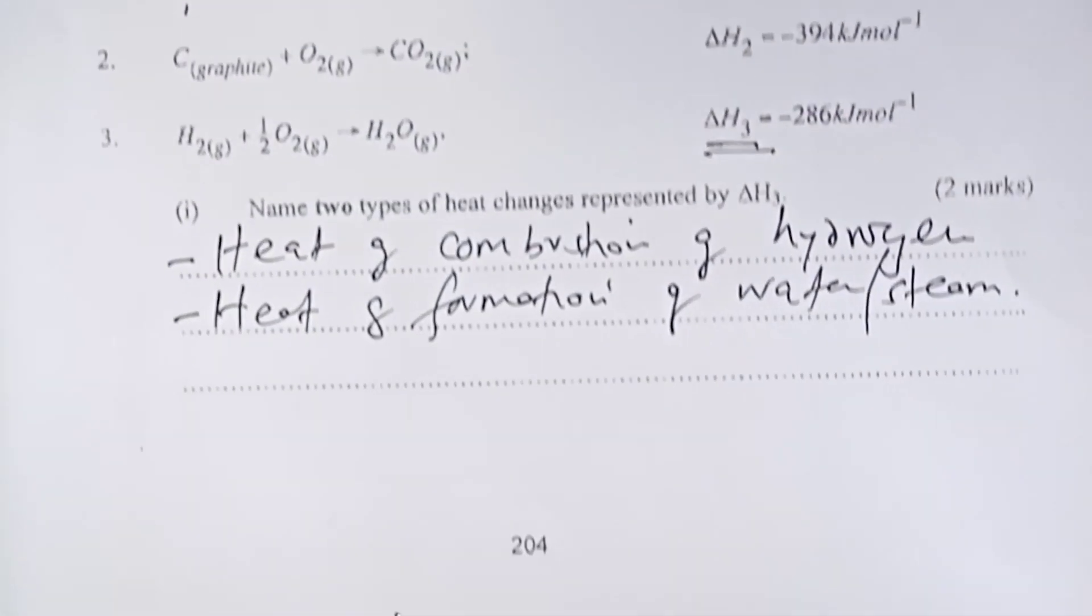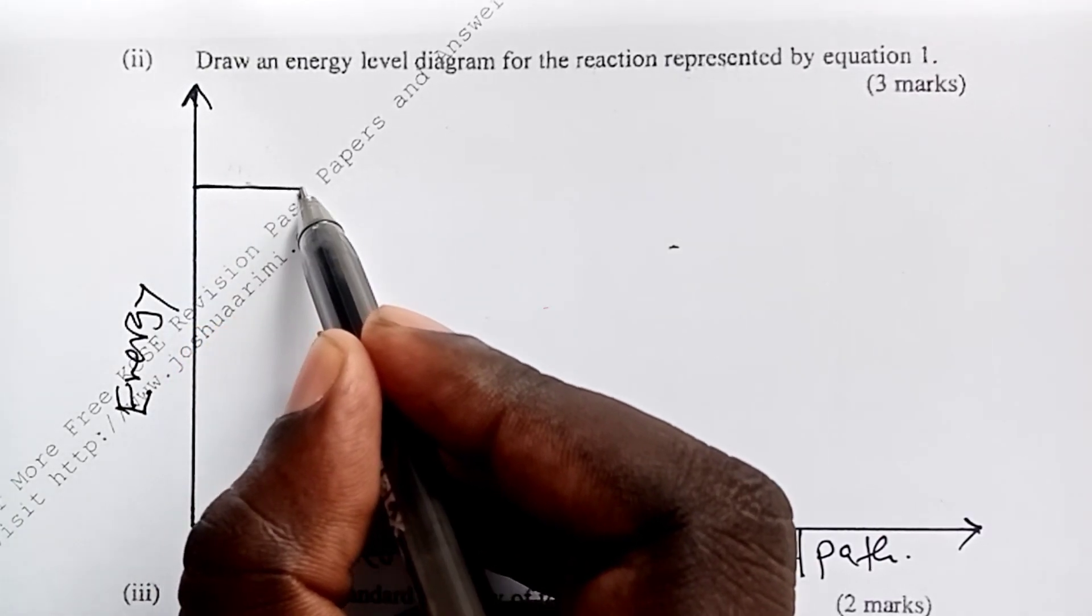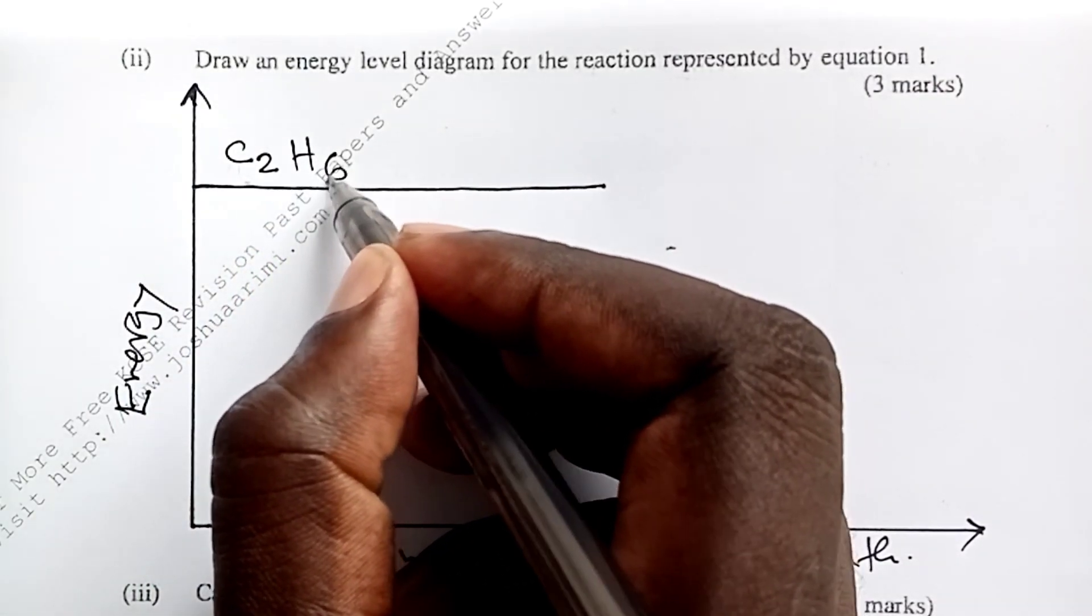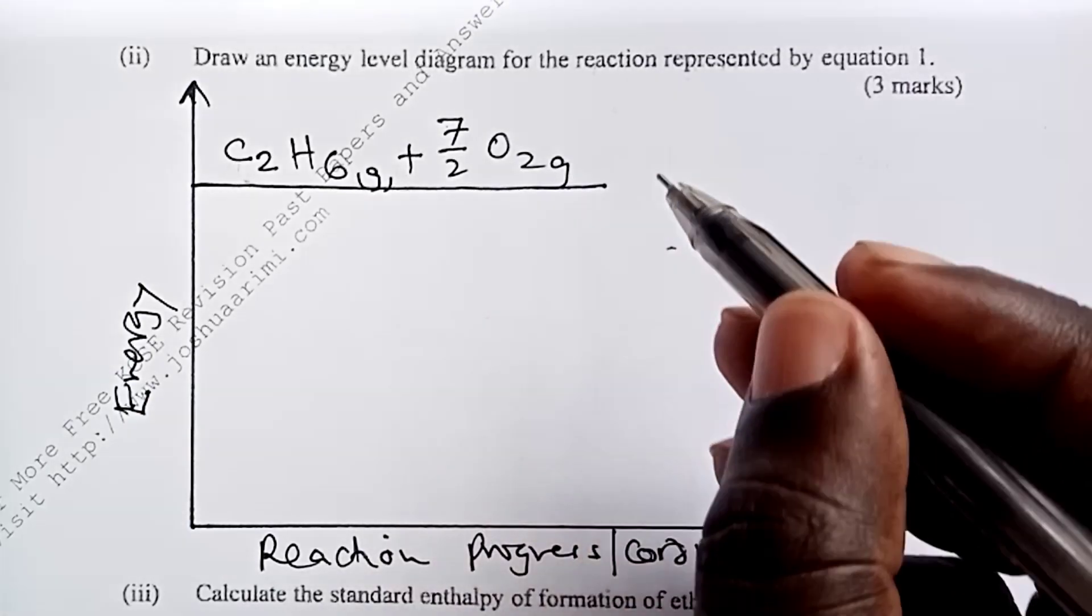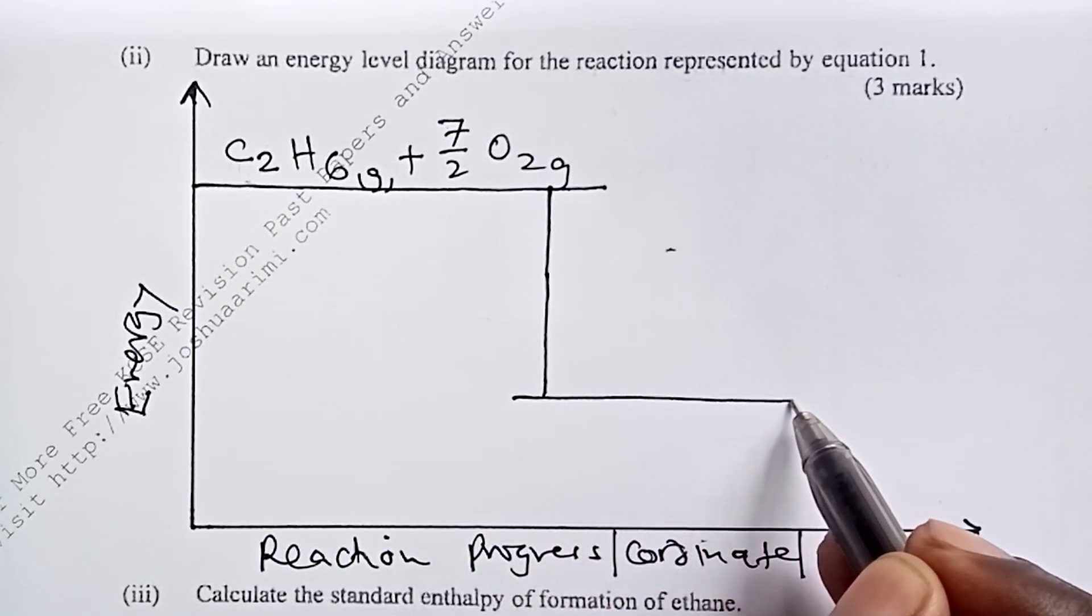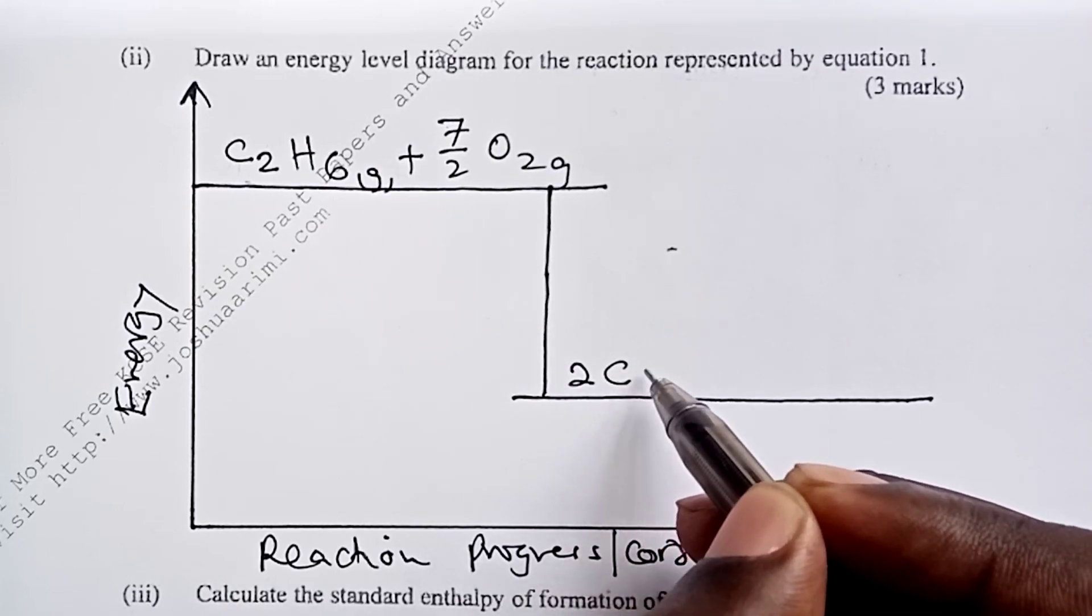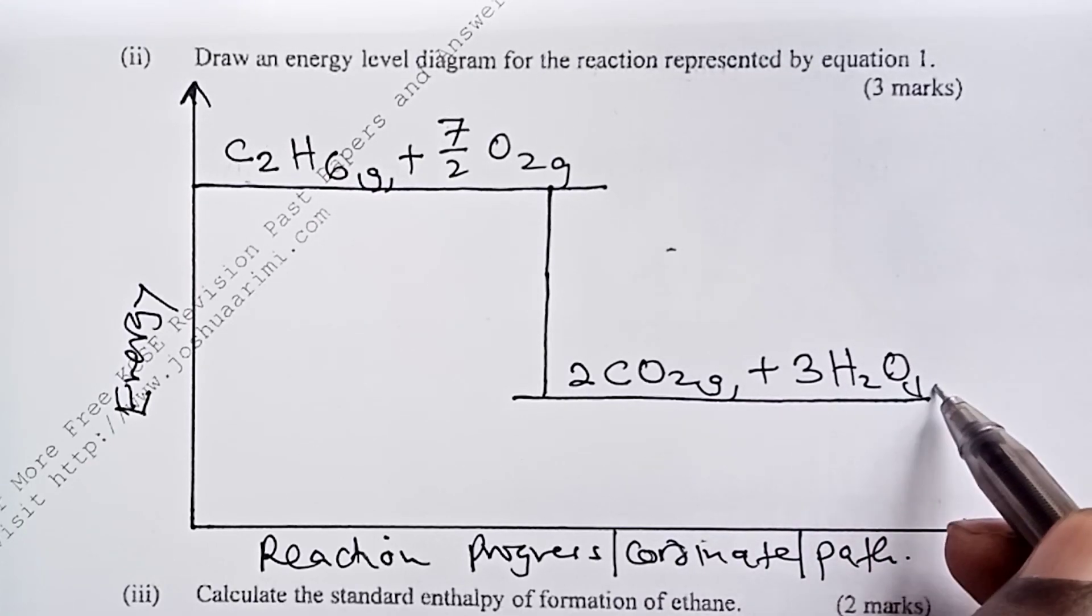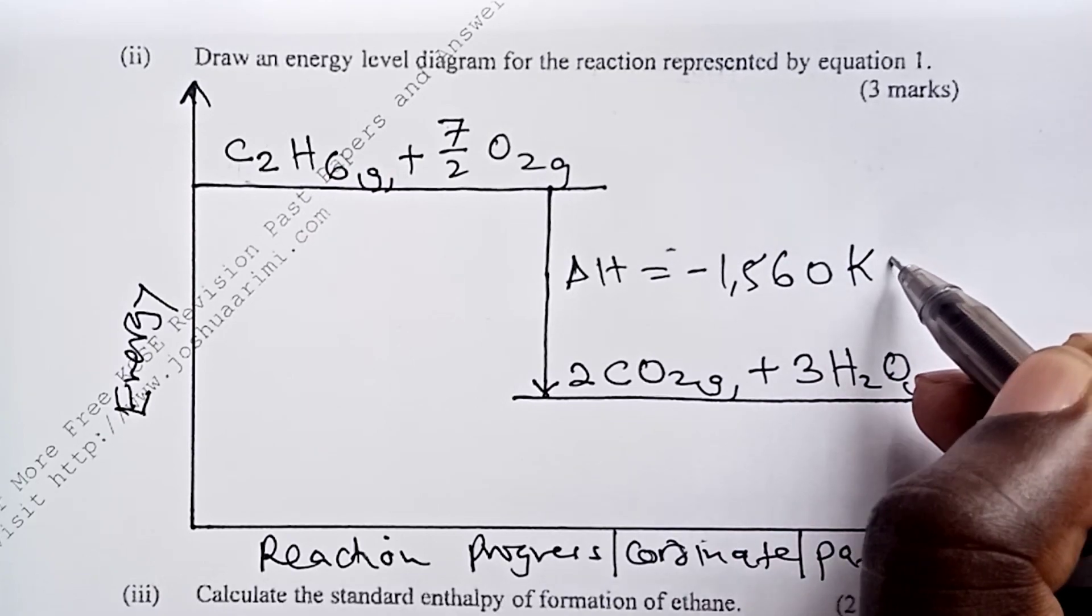So we get back to our energy level diagram and draw. So up here, being an exothermic reaction, the products will have higher energy content than products. So we have our gas there being burnt in excess oxygen. And then the process is accompanied by the system losing about 1,560 kilojoules of energy to form two moles of carbon dioxide and three moles of water. So delta H here is negative 1,560 kilojoules per mole.